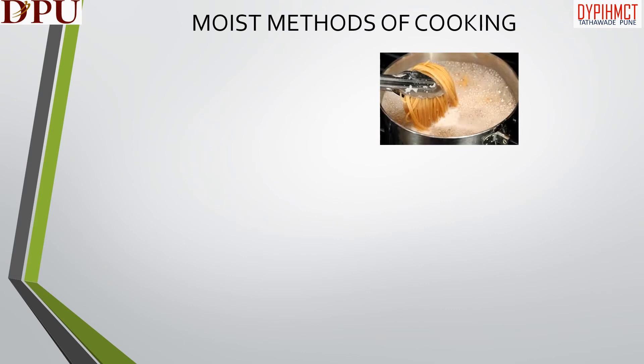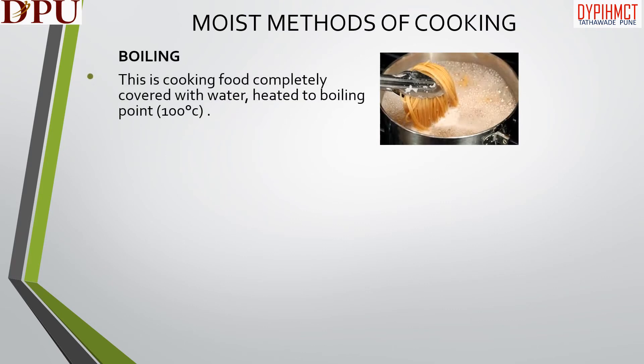In this slide we will discuss about moist methods of cooking. The first method is boiling. This is cooking the food completely covered with water, heated up to boiling point, which is 100 degrees Celsius.